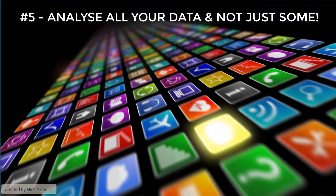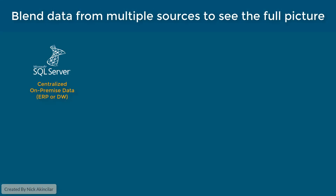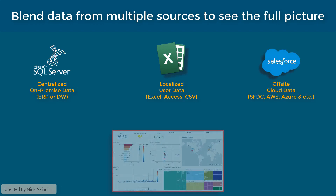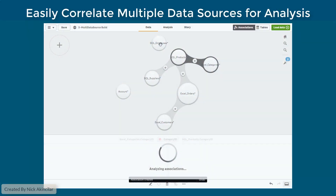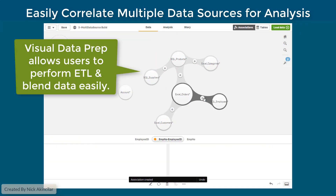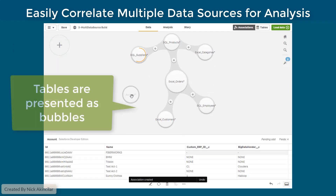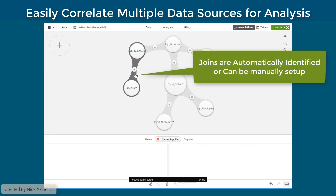Number five: analyze all of your data, not just some. Using Qlik's powerful ETL features, you can easily transform and blend multiple on-premises and cloud-based data sources for data analysis. The Visual Data Prep tool allows users to easily perform ETL and blend data from multiple sources, with table joins that can be automatically identified or manually configured.